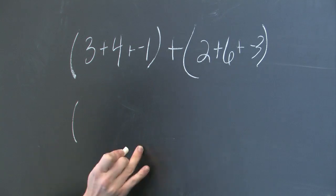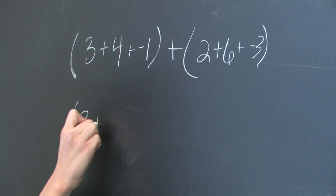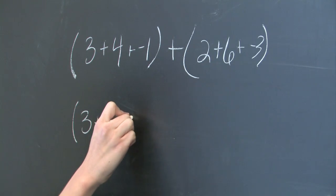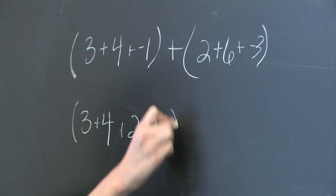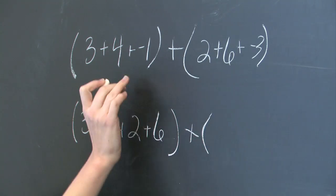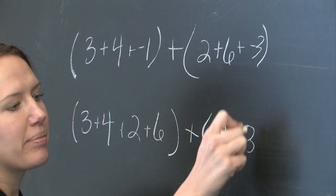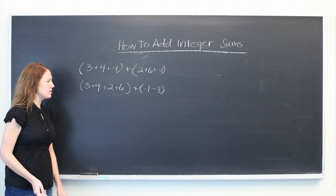So let's say this will be our positive set: 3+4+2+6, added with (-1) and (-3). This just makes our life a little easier.